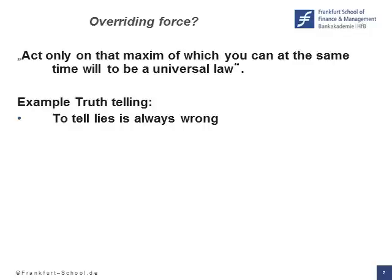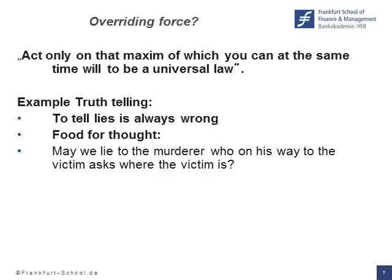If the murderer on the way to the victim asks you where the victim is, you should say where the victim is, if you know it. You are under an absolute obligation to tell the truth. This is, to put it mildly, not completely convincing to most of us. The situation can be rescued by assuming that the norms are only prima facie binding. However, then we have to weigh the norms — and how can we do it without looking at the consequences? So all the alternatives are not very attractive. May we lie to the murderer who, on his way to the victim, asks where the victim is? Just what is your view of the matter?